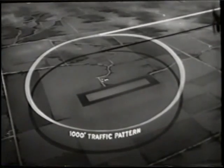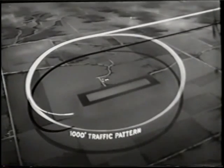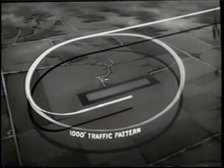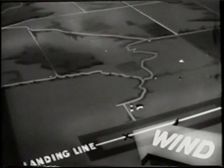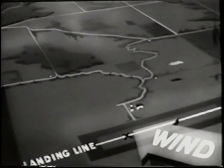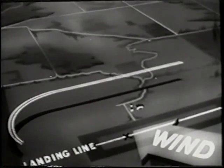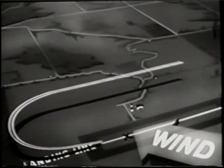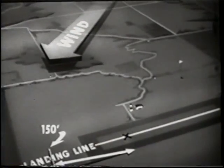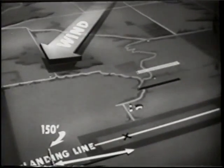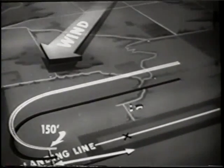In crosswind approaches and landings, the standard field entry procedure is used and the pattern is identical to that of a 180-degree power approach to a touch and go landing. If it is a right crosswind blowing you away from the landing line, the bank of your approach turn is fairly shallow and your power reduction is more gradual. If it is a left crosswind blowing you toward the landing line, your power reduction is more rapid and your approach turn more steeply banked to avoid being drifted past the landing line.